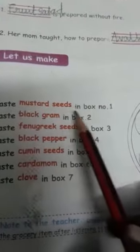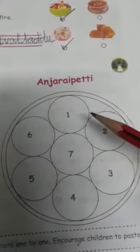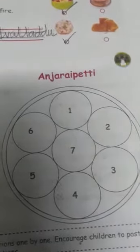Paste mustard seed in box number one. See that? Where is the box number one? Here. Mustard seed in box number one. Here. See here. Mustard seed in box number one. Paste it.